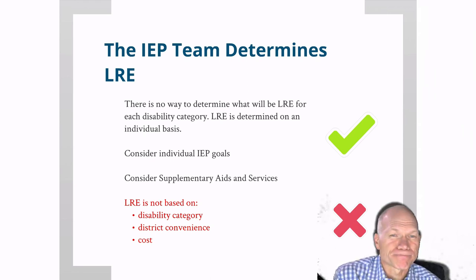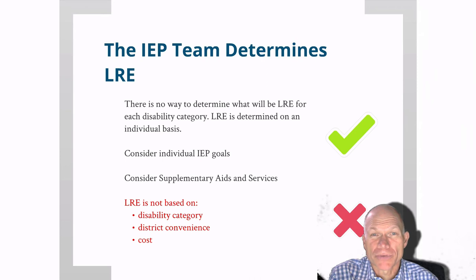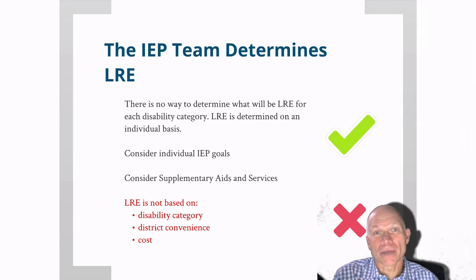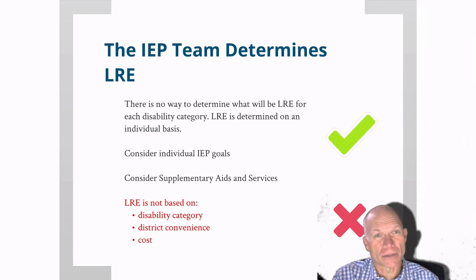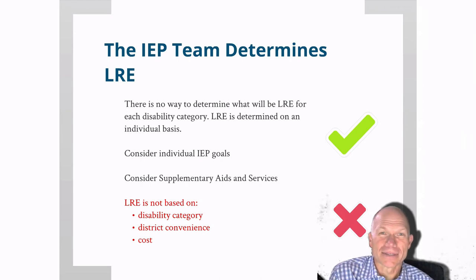How is the determination made? First, there's no way to determine the least restrictive environment based on a disability category. In the old days, when a child was identified with an emotional and behavioral disorder, the immediate reflex was to place them in the classroom for all kids with that disorder. Or if a child had a learning disability, they'd immediately be placed in the resource room for kids with learning disabilities. That's not done anymore — and it probably shouldn't have been done then. LRE is determined on an individual basis, based on the individual needs of the student.